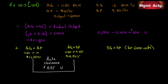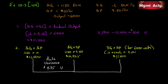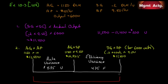Finally, standard quantity times standard price for six thousand units: 0.2 times six thousand times nine fifty gives us eleven thousand four hundred, the same as calculated before. Ten thousand nine twenty-five minus eleven thousand four hundred gives us negative four hundred and seventy-five — four hundred and seventy-five dollars favorable. This is called an efficiency variance. So: five seventy-five unfavorable plus four seventy-five favorable equals one hundred dollars unfavorable for our flexible budget variance. That checks out.